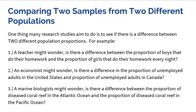Many research studies aim to see if there's a difference between two different population proportions. For example, a teacher might wonder if there's a difference between the proportion of boys and girls that do all their homework every night. An economist might wonder about the difference in the proportion of unemployed adults in the United States versus Canada. A marine biologist might wonder about the difference between the proportion of diseased coral reef in the Atlantic versus the Pacific Ocean.